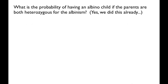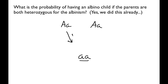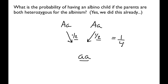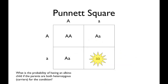Let's put this into genetics. What's the probability of having an albino child if both parents are heterozygous? We did this already, but now we're going to do it without the Punnett square. Each parent has a 1/2 probability of donating the recessive allele. In order to get two recessive alleles, I need this and that — so the probability is 1/2 times 1/2, which is 1/4. That is exactly the same result we got with the Punnett square.